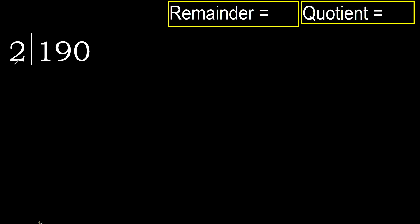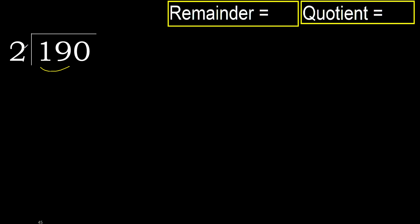190 divided by 2. 1 is less, therefore next. 19 is not less, therefore work with 19. 2 multiplied by which number is nearest to 19 but not greater? 2 multiplied by 9 equals 18.